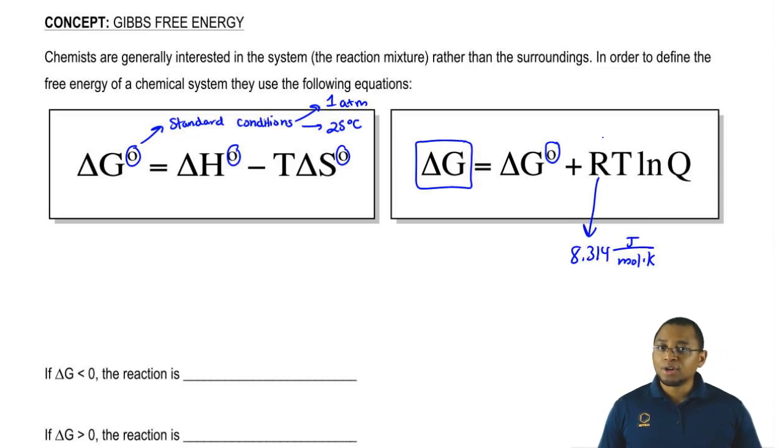T is our temperature in Kelvin. Q is known as our reaction quotient.